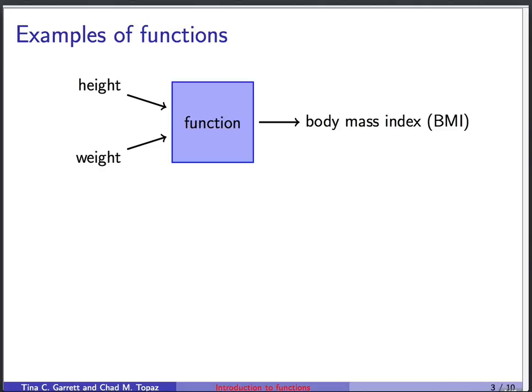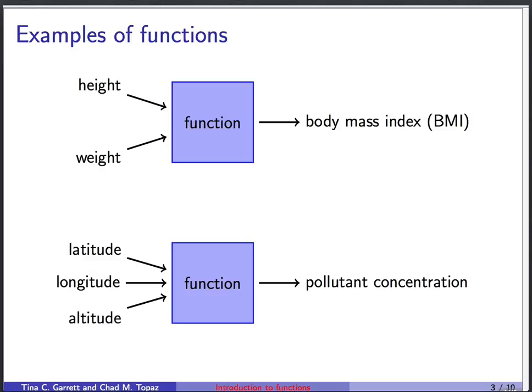To make this concrete, we could consider a couple of examples. One is the function that determines body mass index. Body mass index, or BMI, is a somewhat controversial measure that's used to determine whether people are obese or not. And the basic idea is that whether or not you're obese depends on your height and your weight. So BMI is a function that takes height and weight as independent variables and gives this measure BMI out as the dependent variable. Another example is a pollutant concentration in the atmosphere. We might specify the latitude and longitude of a particular location on Earth, and then the altitude, how far up into the air we go. And then we can ask, at that point, what is the concentration of some particular pollutant? And the function is the rule that gives us the right answer for those inputs.